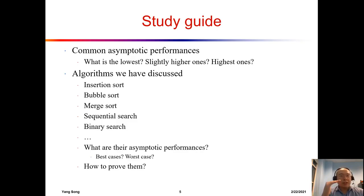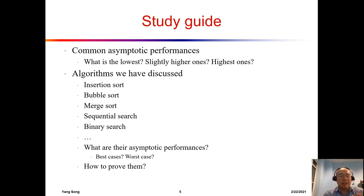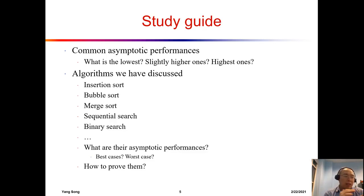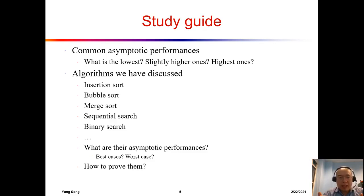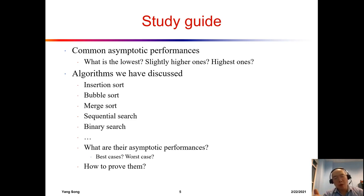Next are common asymptotic performances. The fastest possible is constant time. The next best is O(log n), followed by linear O(n), then n log n, then n², and so on. When I give you a collection of asymptotic complexities and ask you to sort them from low to high, you should have that ordering in your mind.